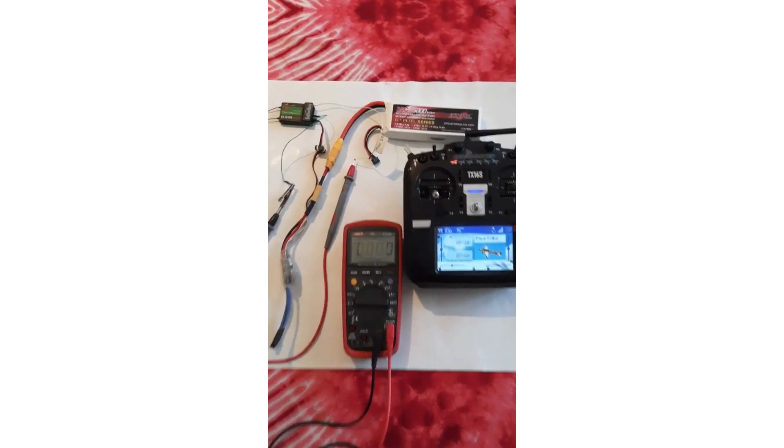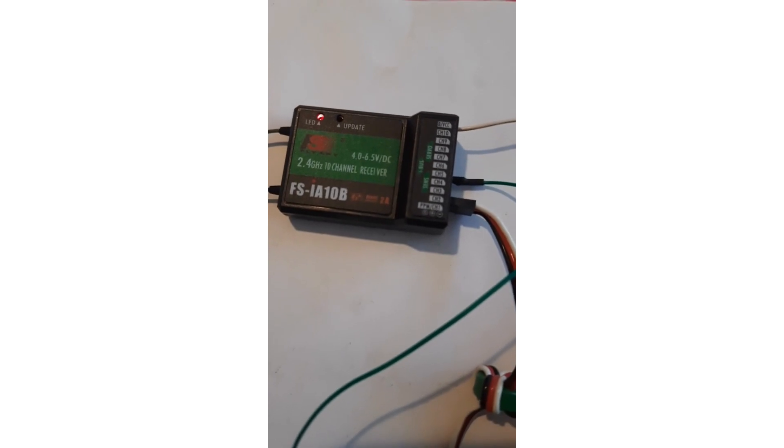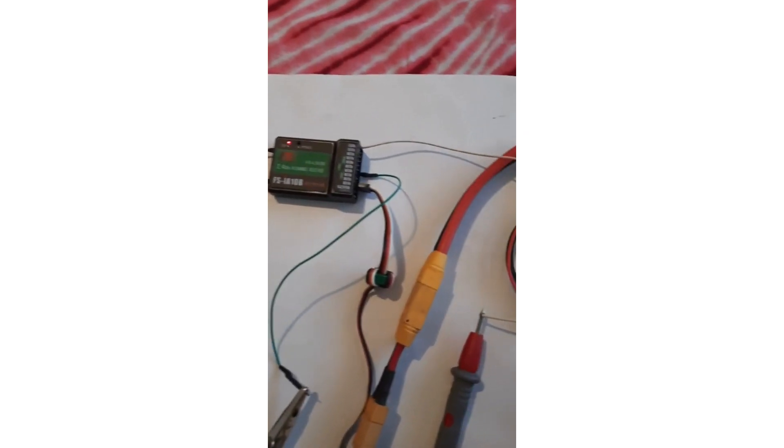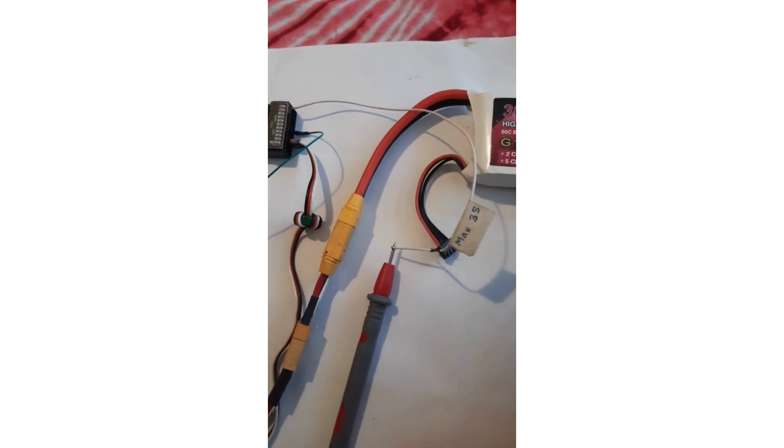I am going to show you how to modify the Flysky IEA 10B receiver to get the battery voltage instead of the original 5 voltage fixed value.